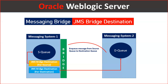In a nutshell, in the enterprise world where multiple applications are scattered around and communicating with each other, we need a system in place so that applications can communicate. That means applications are sending messages from one application to another.